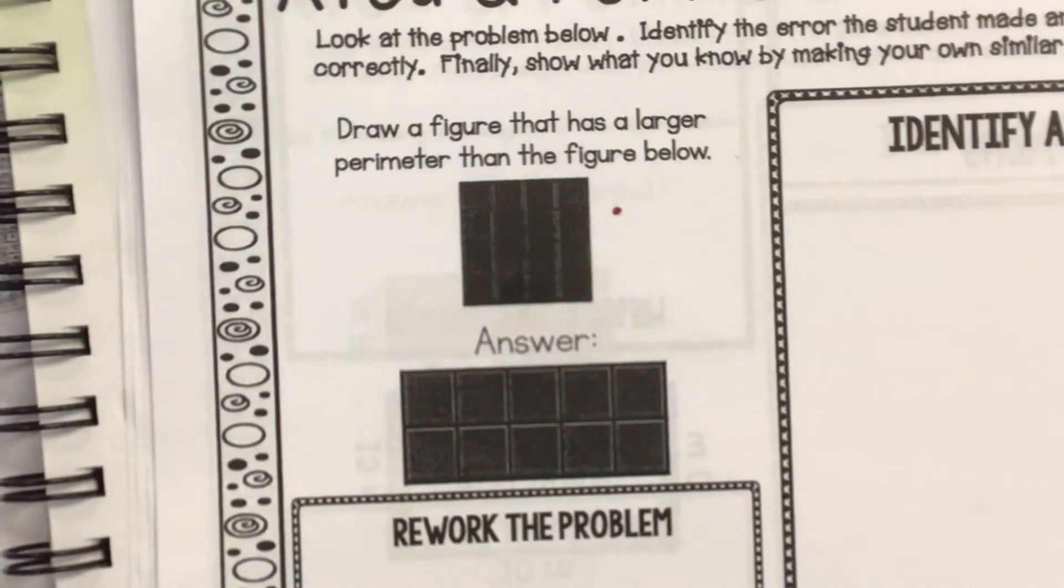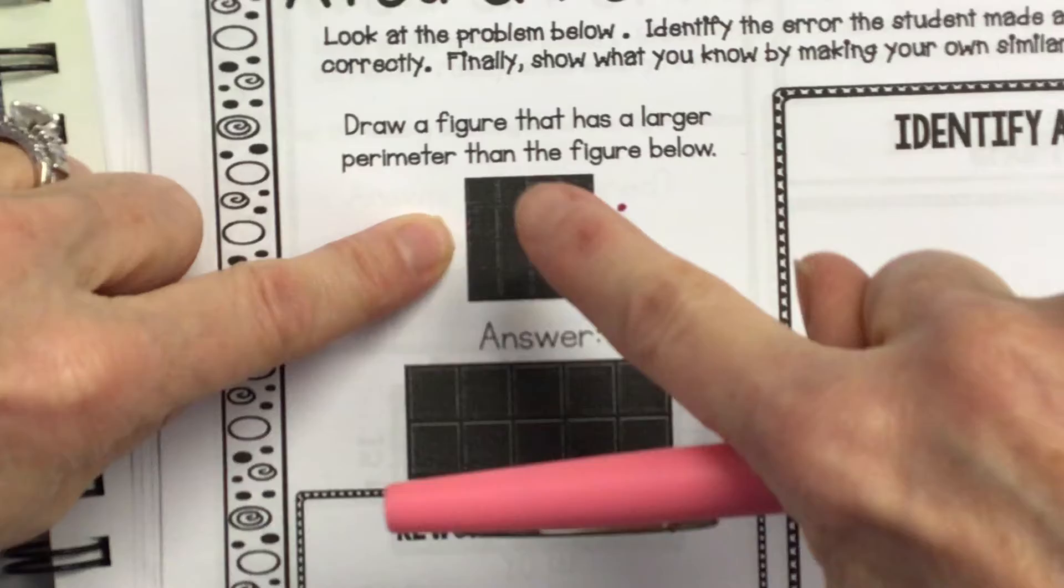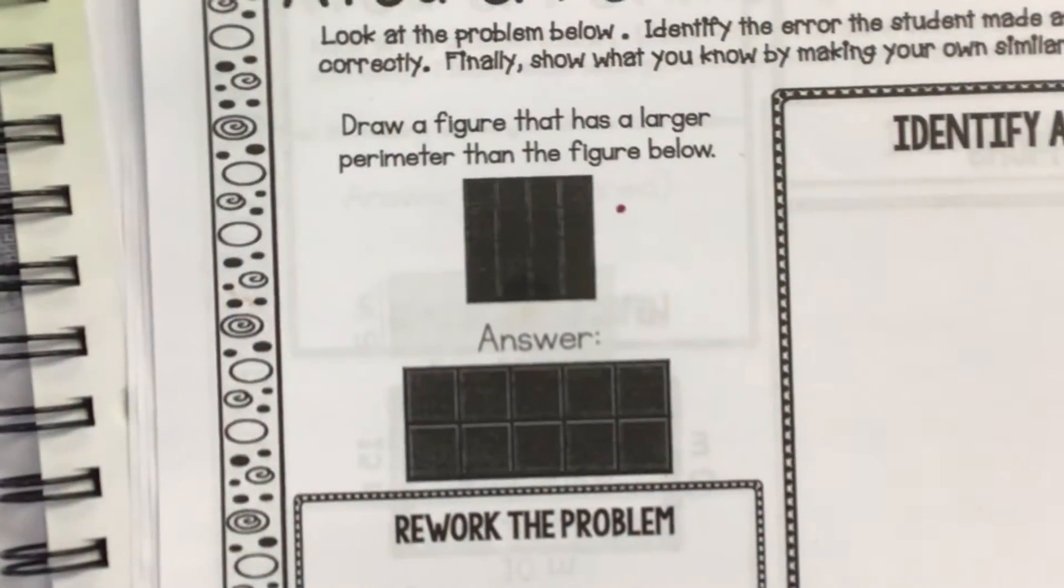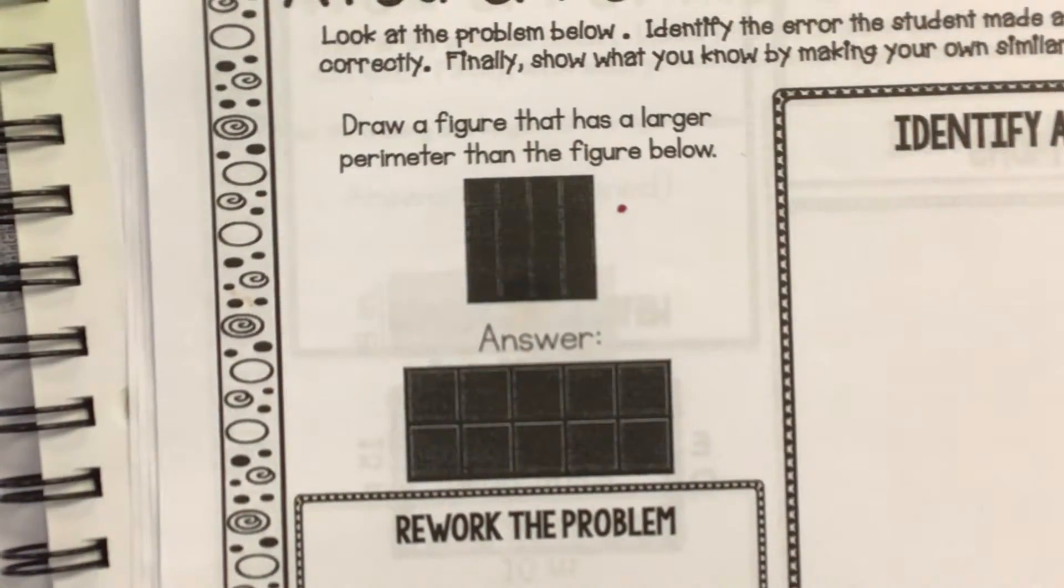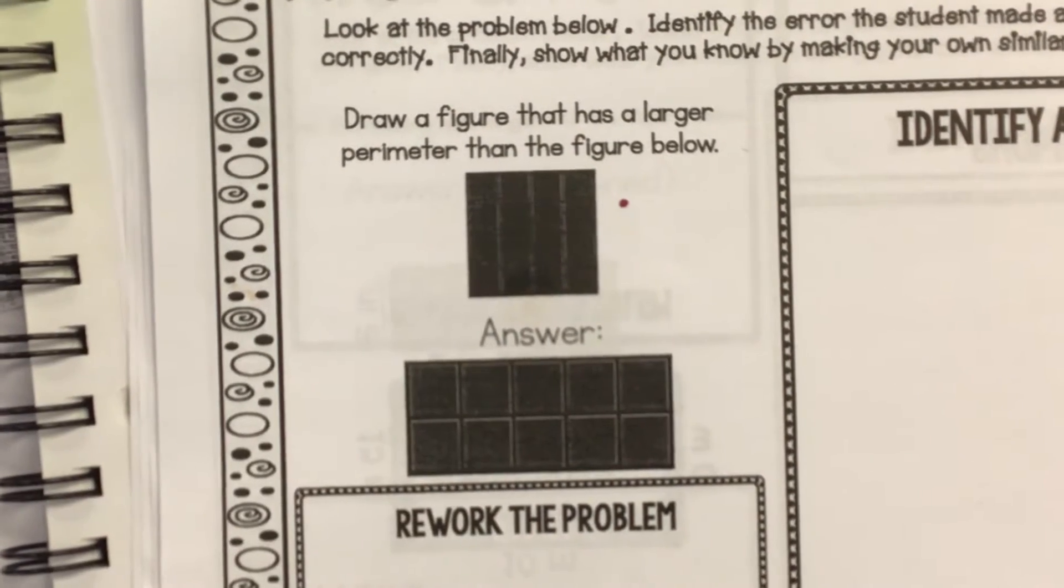The perimeter of this shape. All right, I'm going to ask a tricky question. What are the dimensions of this shape? Every hand should be up or counting. What are the dimensions of this shape? Ryan.